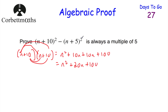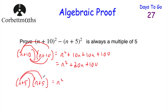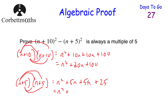Now we're going to subtract (n+5) squared, so let's expand (n+5) multiplied by (n+5). When we expand that: n times n is n², n times 5 is 5n, 5 times n is 5n again, and 5 times 5 is 25. When we simplify that, we get n² + 10n + 25. So we've squared our first bracket and we've squared our second bracket — now we just need to take them away.